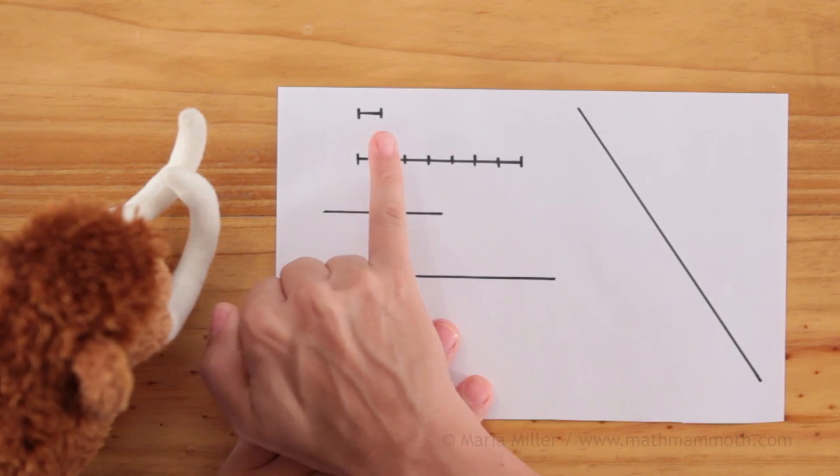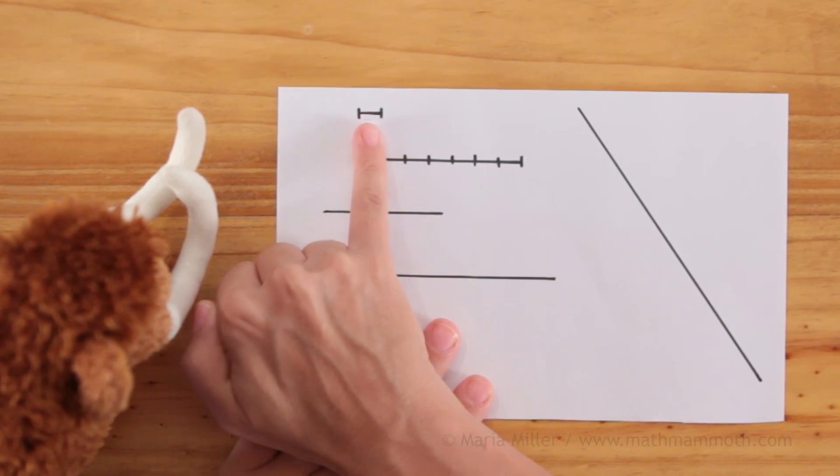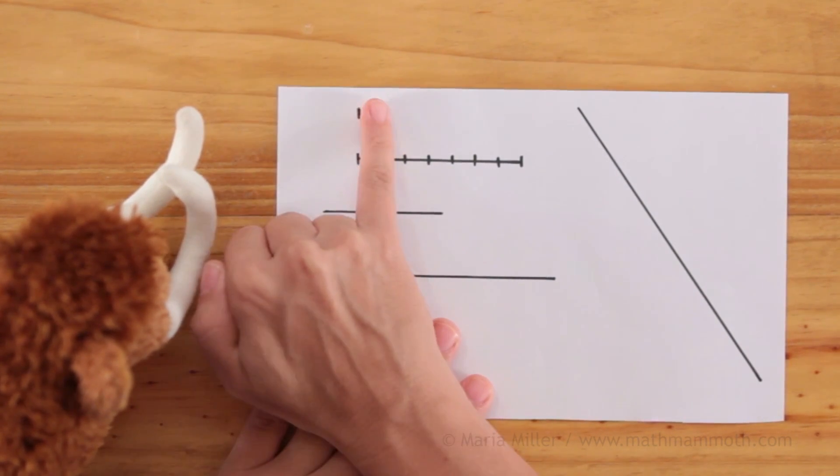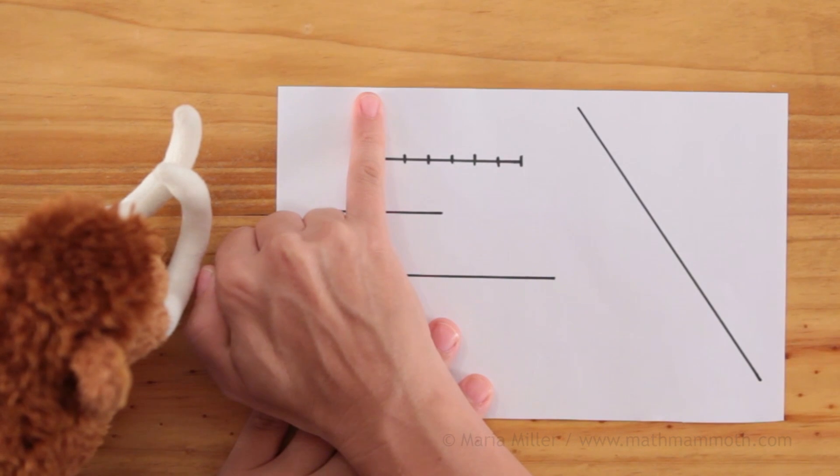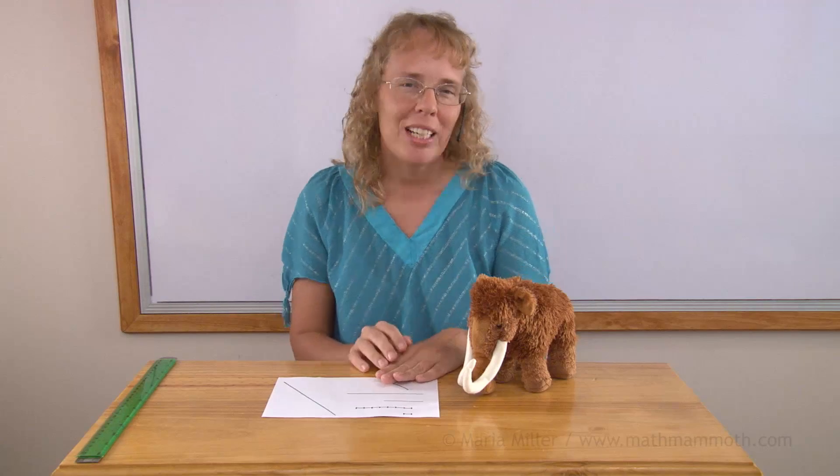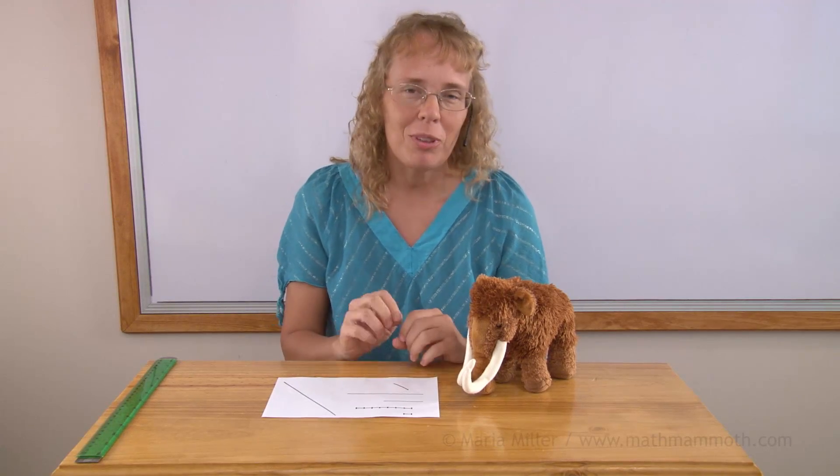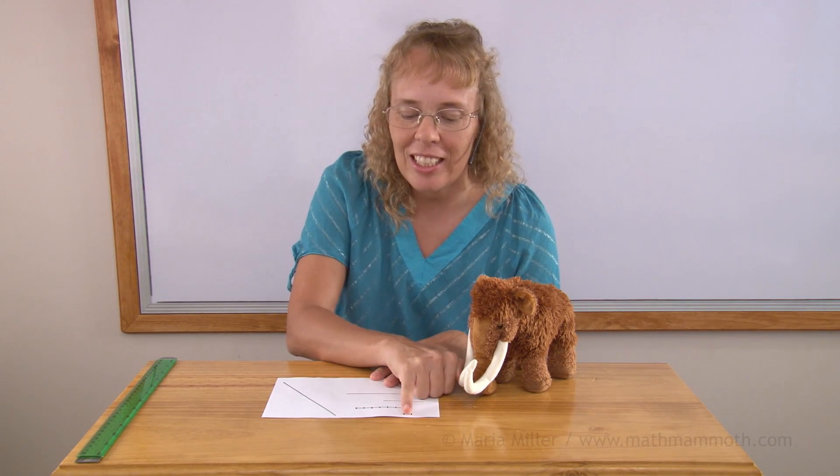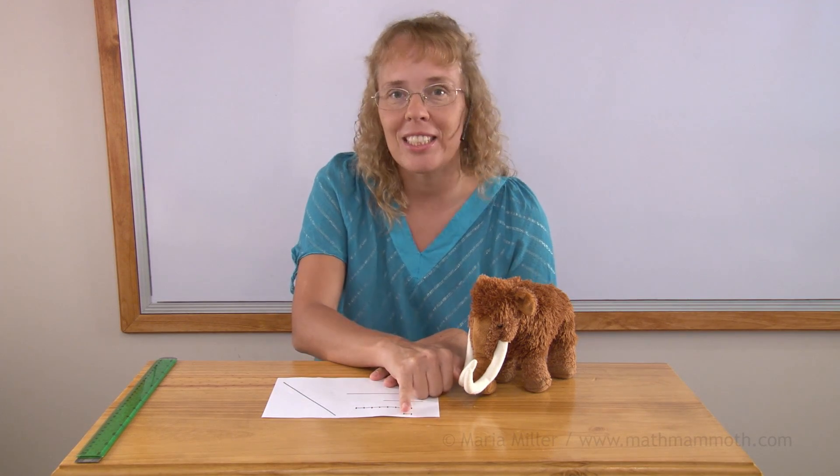And look, when I put my pinky here on top of it, you can see that my little finger is about one centimeter wide. It's a little bit fatter than that. But if your fingers are smaller, you probably can find a finger that is exactly one centimeter wide or one centimeter across.